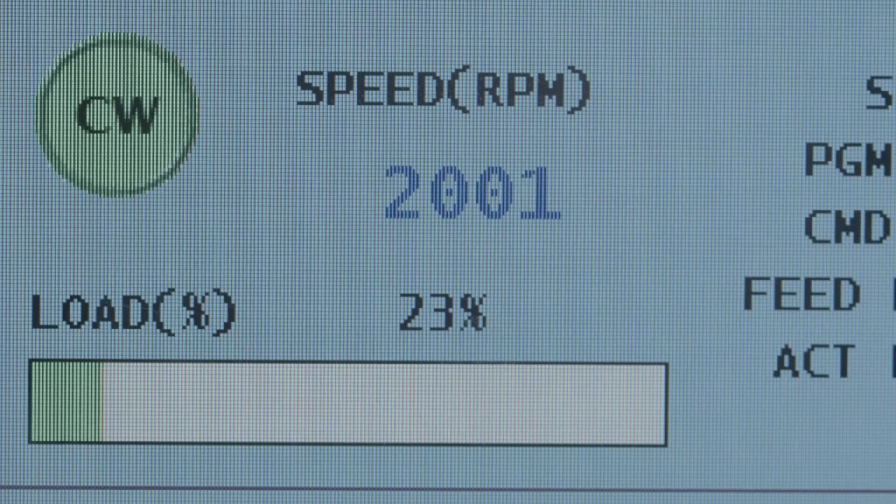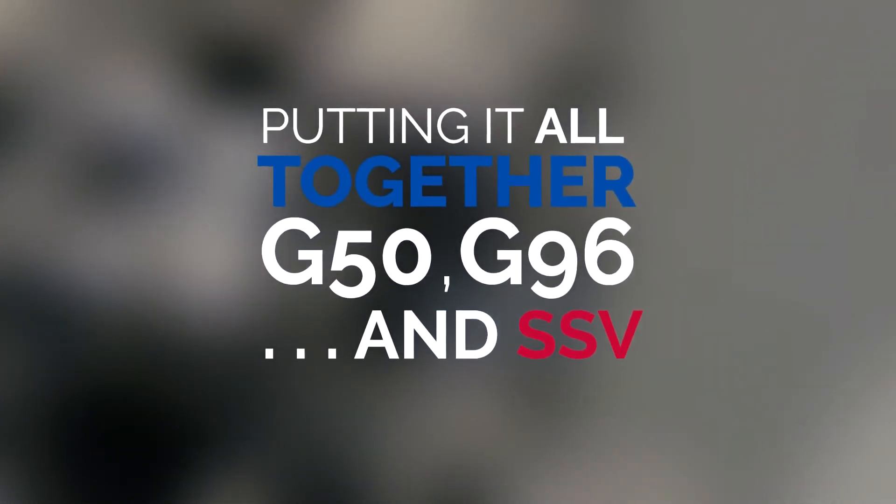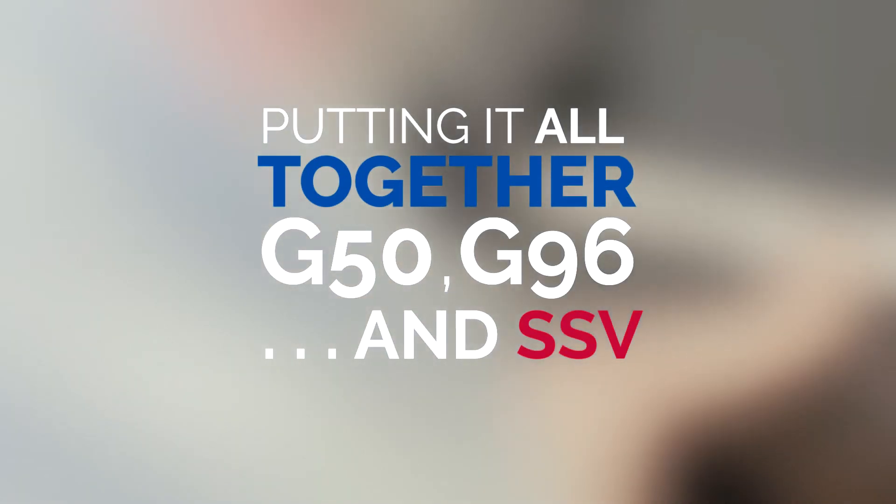Now the spindle can't go above 2000. G50 is often used in this way, to keep G96 commanded spindle speeds in check. OK, let's recap, and we'll see how G96 and G50 can interfere with SSV.